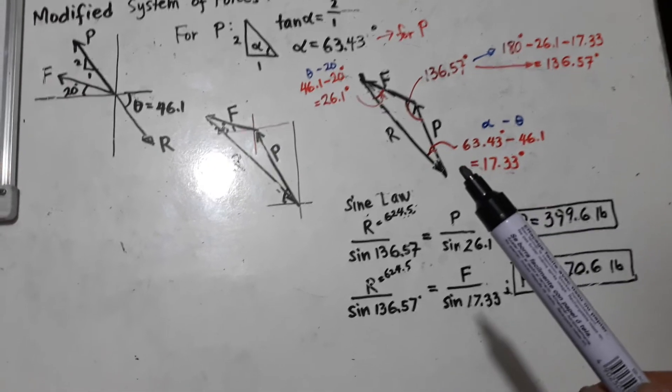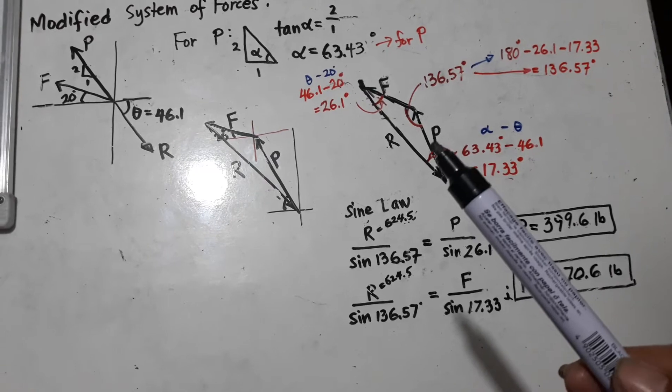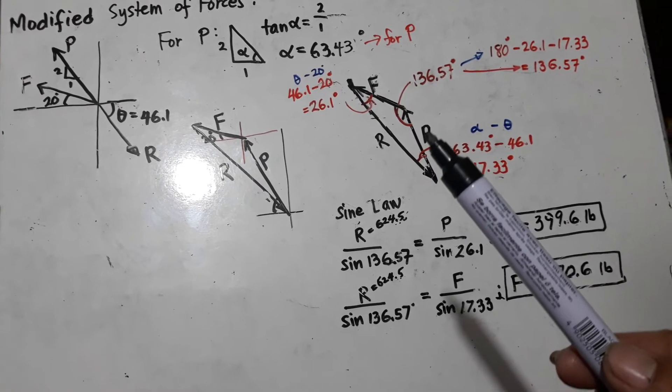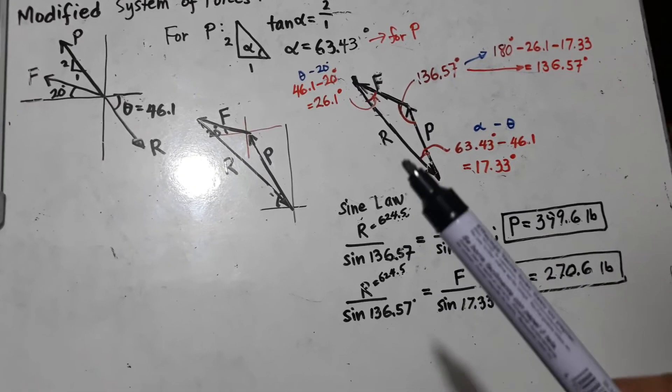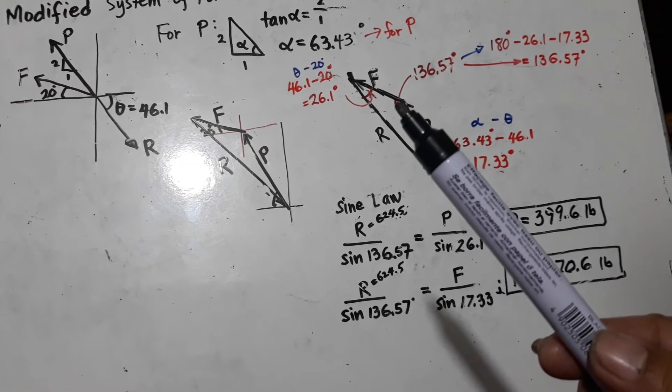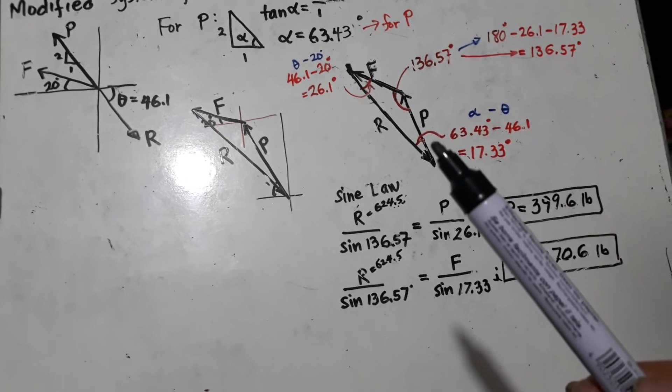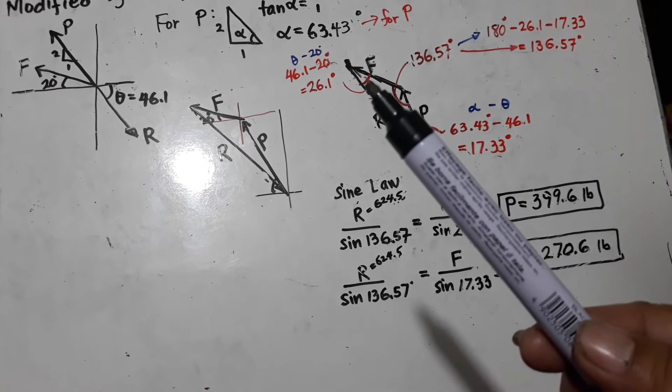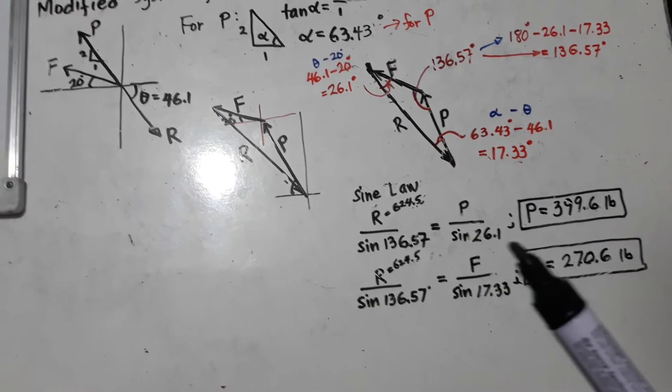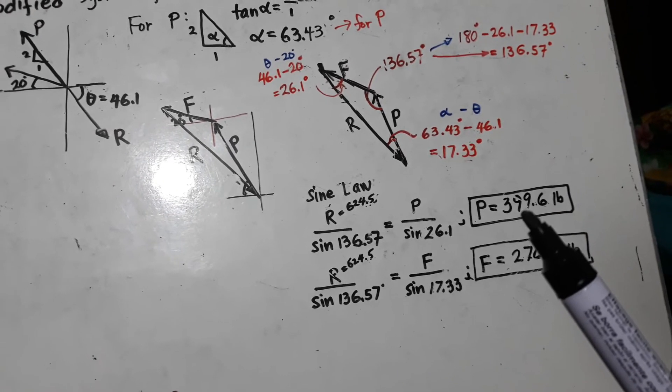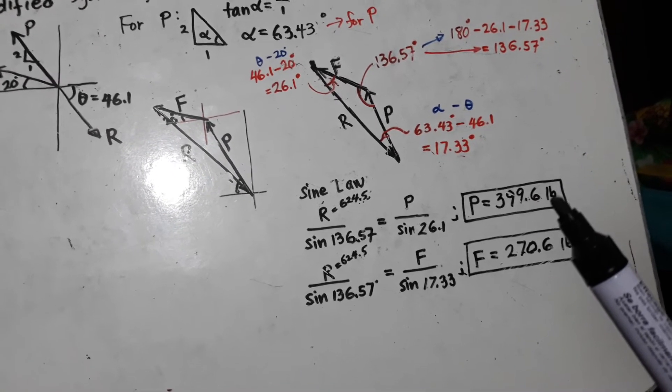So, in order to solve for the value of P and F, we are going to use the sine law. So, R divided by the sine of 136.57 is equal to P divided by the sine of the opposite angle, 26.1. So, solving P, P is equal to 399.6 pounds.